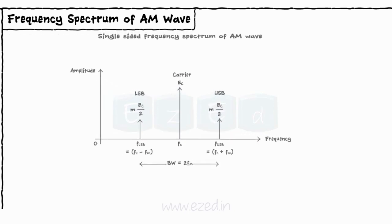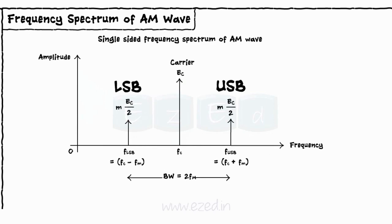Thus, we get the frequency spectrum of the AM wave as shown with the carrier and the two sidebands.